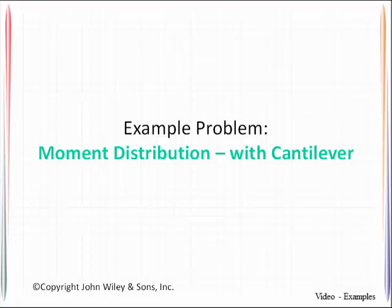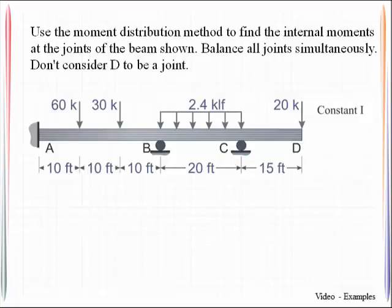In this example you will learn how a cantilever end is handled in the moment distribution method for a multi-span beam. We're going to be taking a look at this particular member and the key here really is going to be don't consider joint D to be a joint.